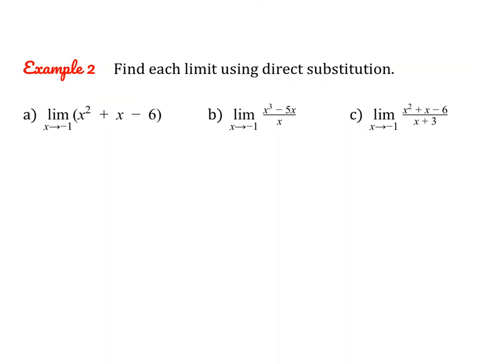Let's try a couple of problems using direct substitution. For this first one, it's a polynomial function, so it's always okay to do direct substitution. I plug in negative 1 and we end up with negative 6, because we have positive 1 minus 1 minus 6. For the next problem, we need to check the denominator to make sure our resulting value is defined. Plugging in x equals negative 1, the denominator is not 0, so it's okay to proceed. Substituting negative 1 gives us negative 4.